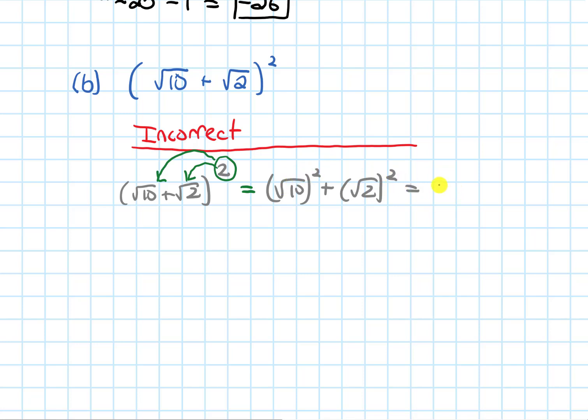It would cancel that root, and if we added these, we'd get 12. But that's not the case. This is not a legal step. I can't just distribute a power like that. We can't distribute an exponent over an addition or a subtraction.